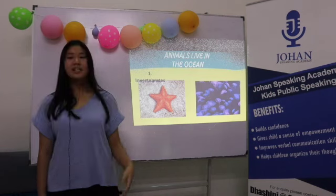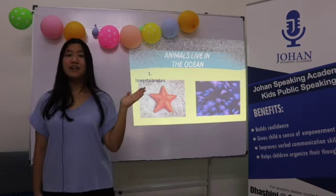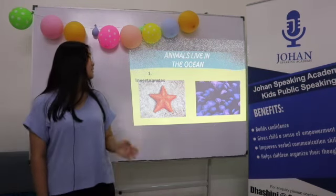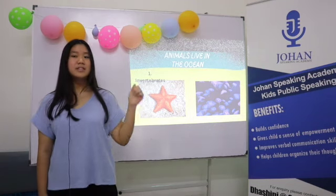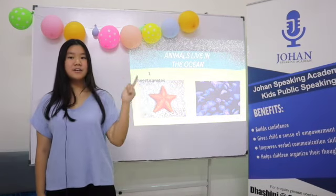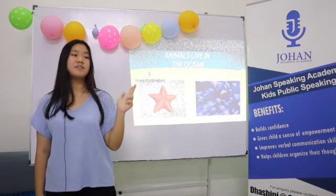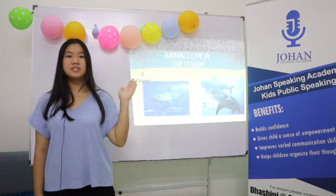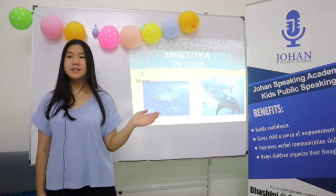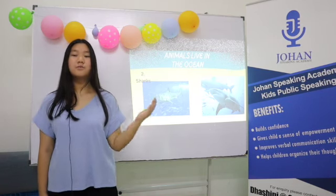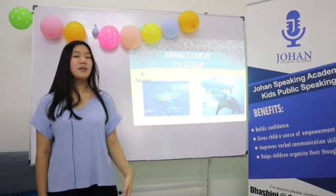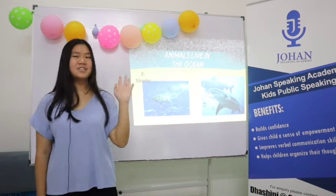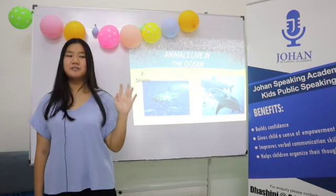These are the animals that live in the ocean. The first one is invertebrates. Some of these species include sea slug, jellyfish, and starfish. The next one is shark. Sharks have inhabited the ocean waters for millions of years. There are over 500 species of shark living in our ocean.